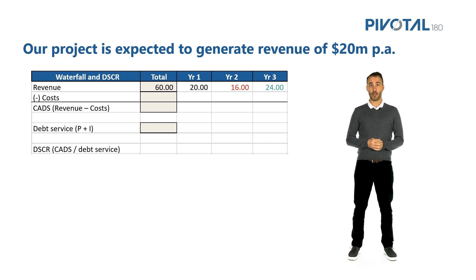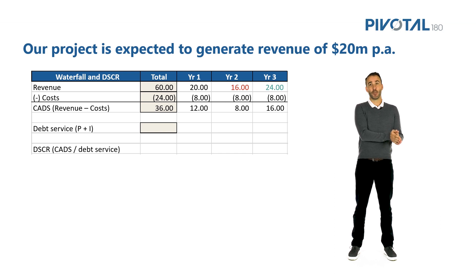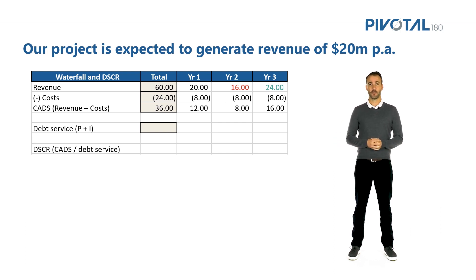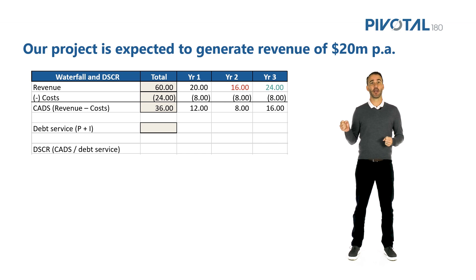Our costs in this example are $8 million every year, and CADs will be revenue less our costs. So if things had gone to plan, CADs would have been $12 million per year — $20 million of revenue less the $8 million of costs. Our debt service was initially sculpted to a 1.33x DSCR based on CADs of $12 million, so it should be $12 million divided by 1.33, which is $9 million per annum.